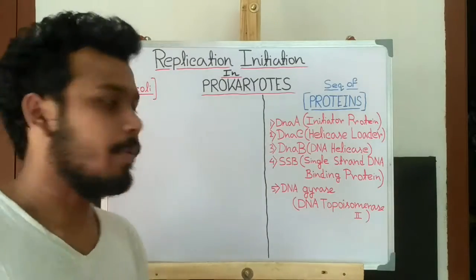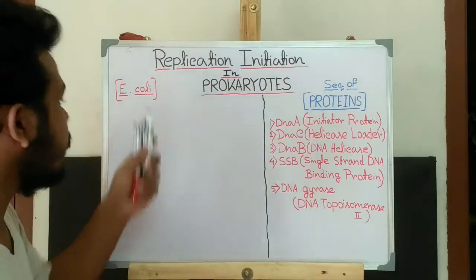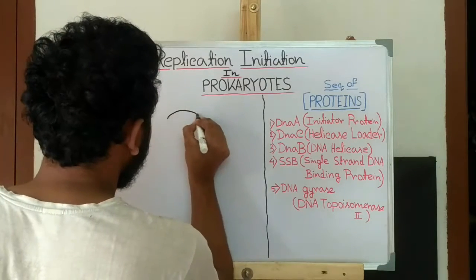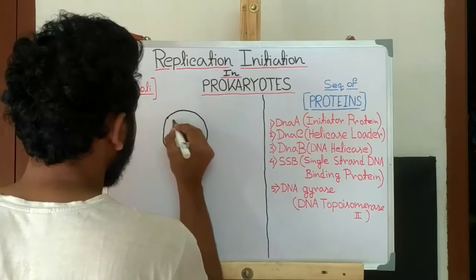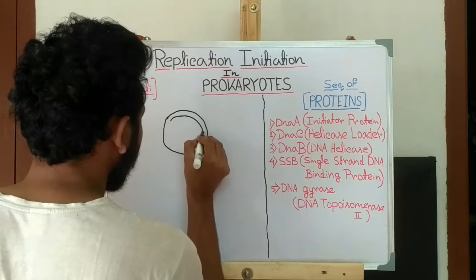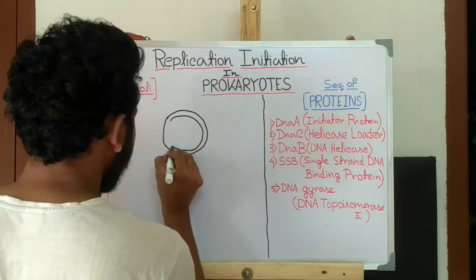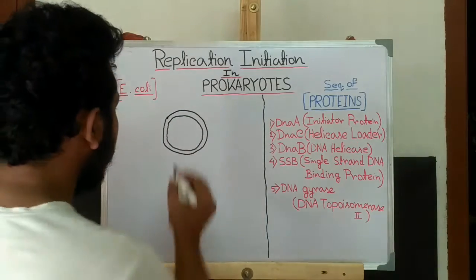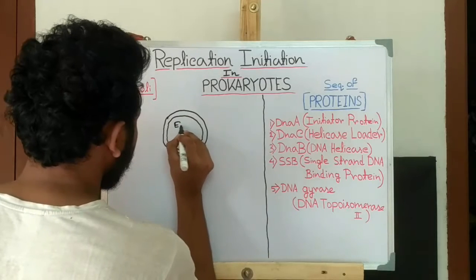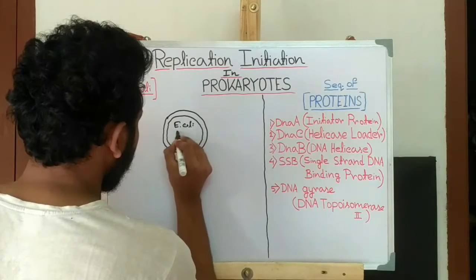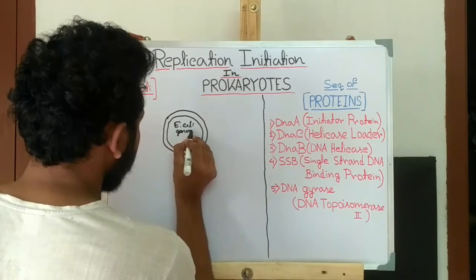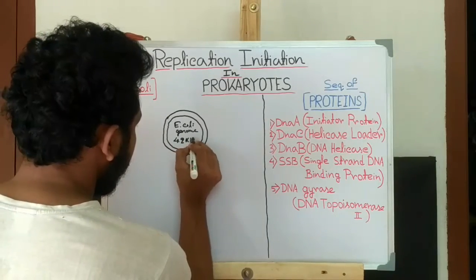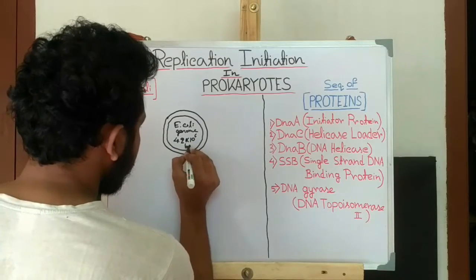Here we will basically discuss about the replication of E. coli. Suppose this is the whole genome of E. coli, and it contains a total of 4.2 x 10^6 base pairs.